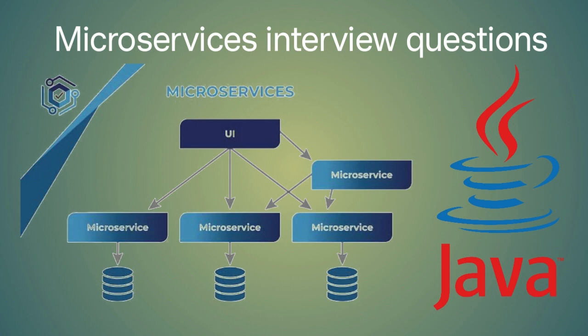How do you ensure that microservices are communicating with each other correctly and efficiently? To ensure correct and efficient communication, you can use protocols like REST, gRPC, or messaging patterns like Publish-Subscribe. Service discovery tools can also help in dynamically discovering and routing requests to the appropriate microservices.